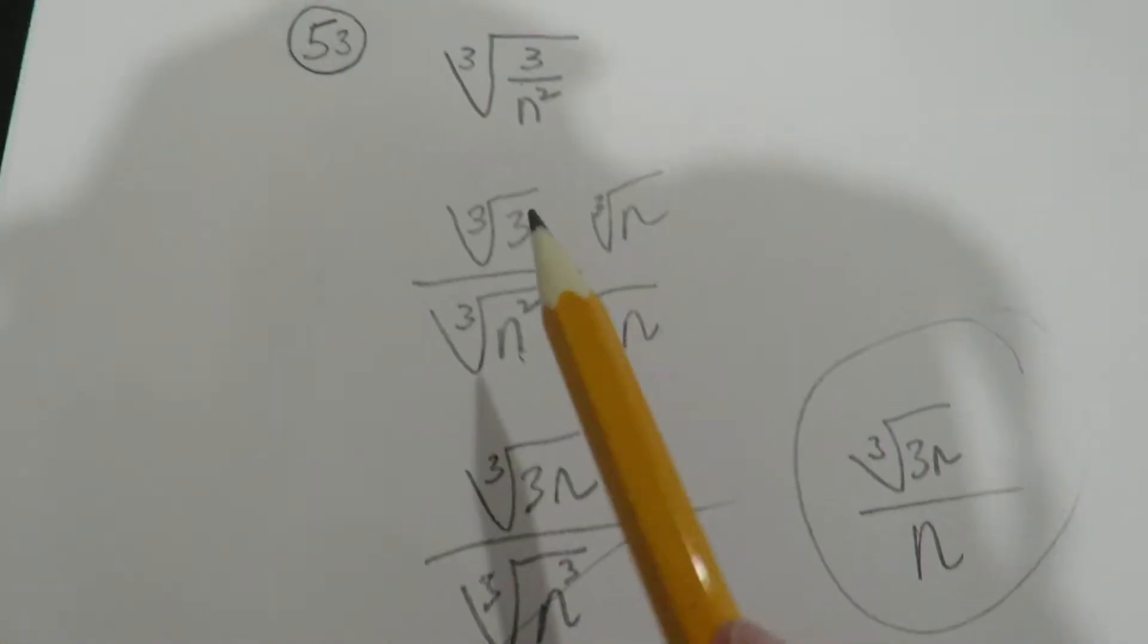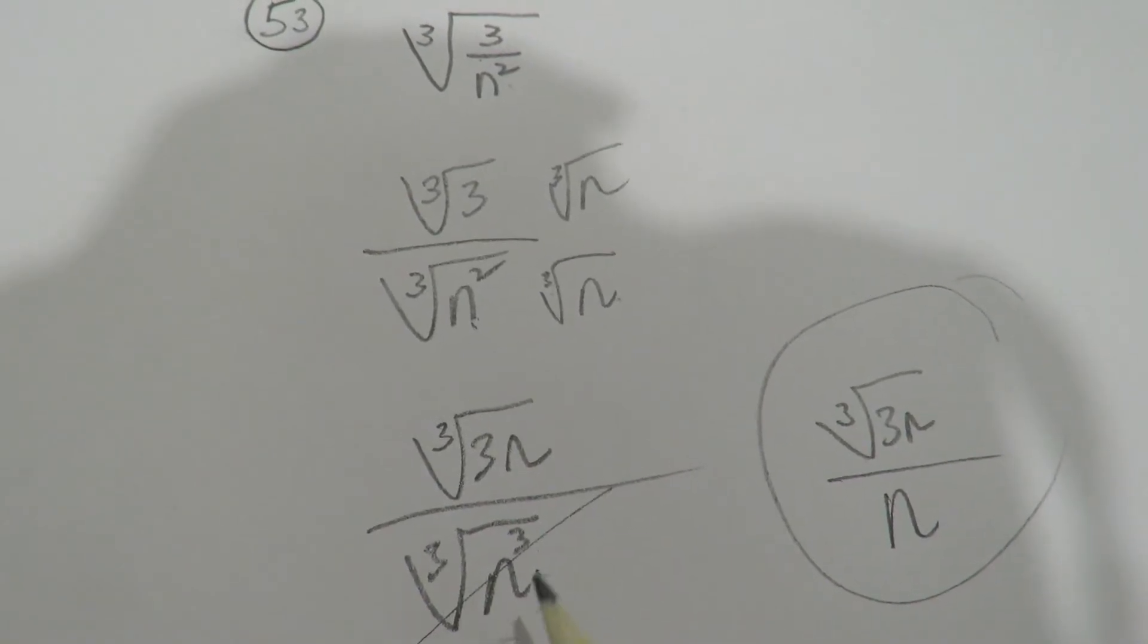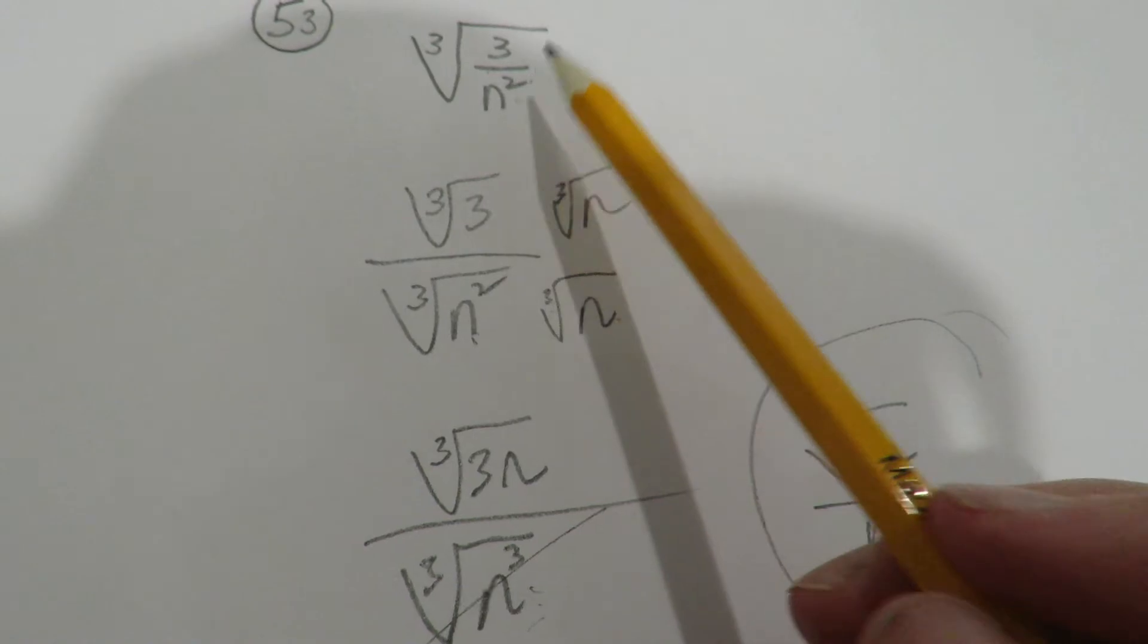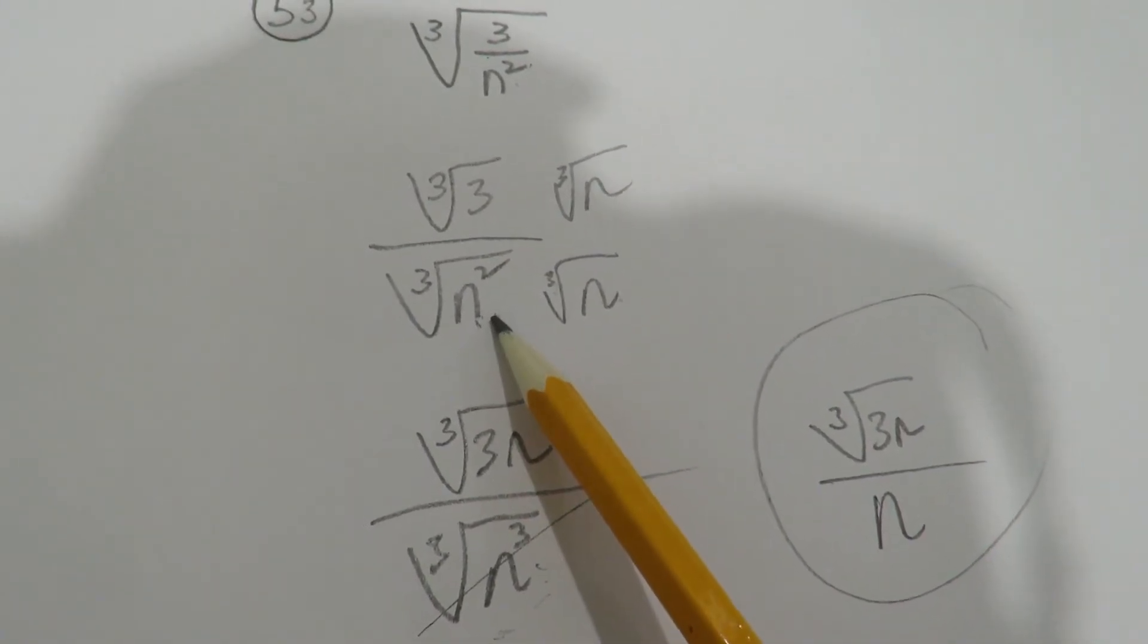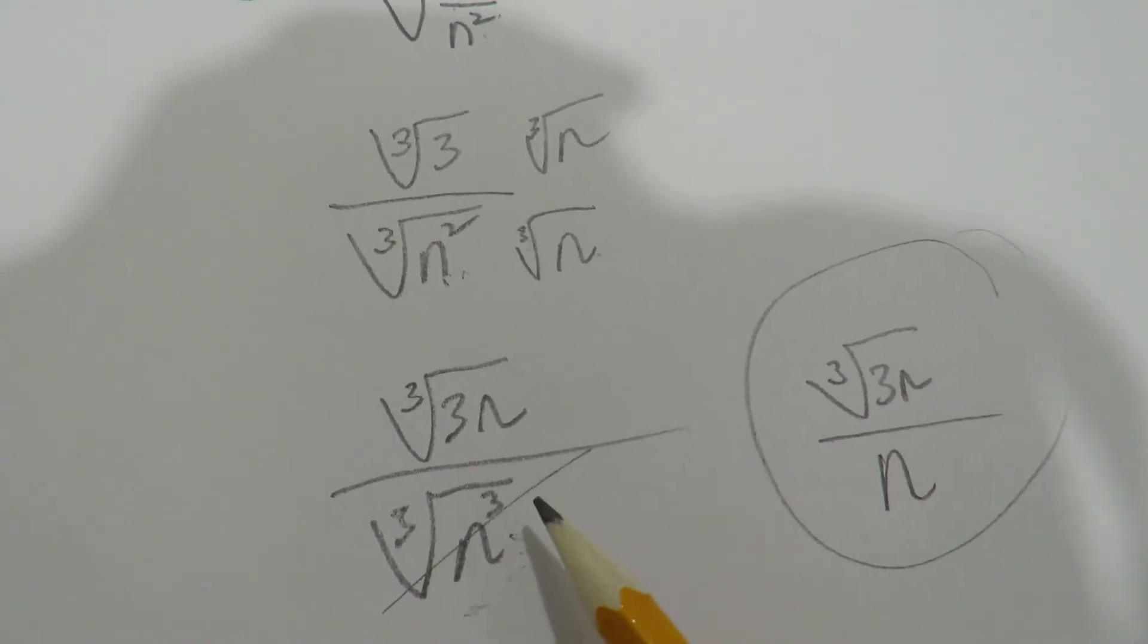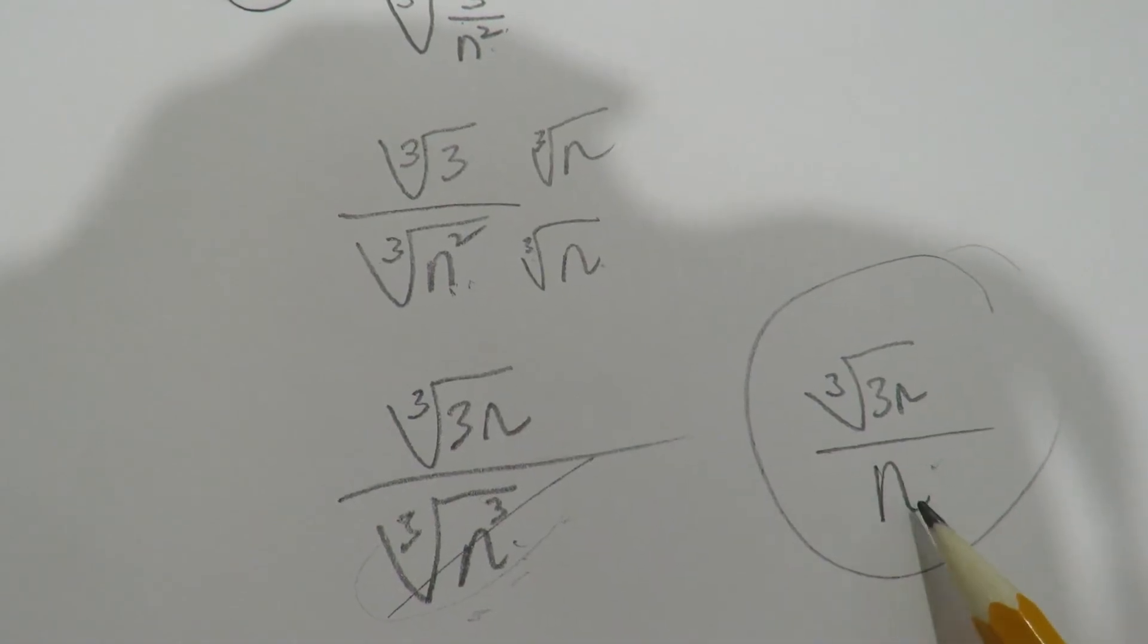But the whole idea is you have to get the fraction out from under the radical, and you can't leave any radicals in the denominator. Let me say that a little better. No fractions under the radical as a final answer. No radicals in the denominator as a final answer. So you have to make them perfect squares, perfect cubes, perfect force in the denominator, so that they simplify out.